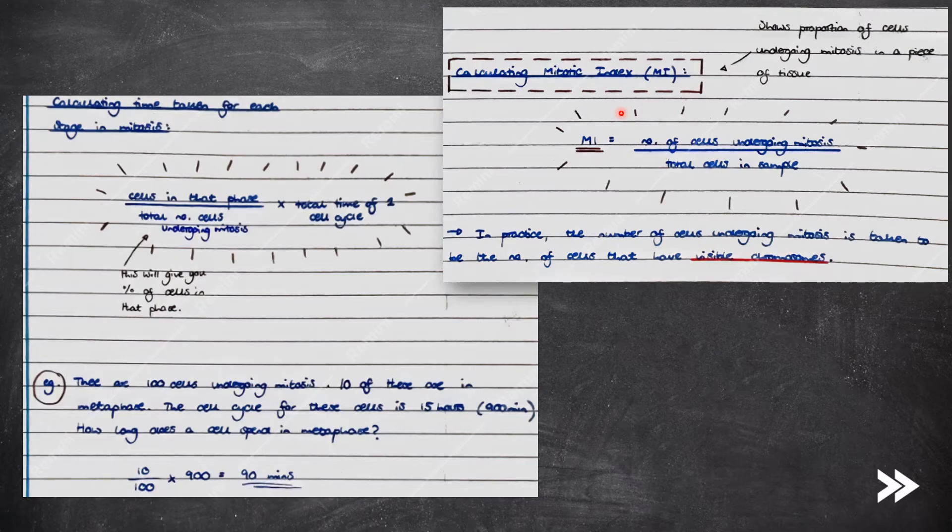In practice, the number of cells undergoing mitosis is taken to be the number of cells that have visible chromosomes. So, if you are given a microscope image of a piece of tissue, the number of cells undergoing mitosis will be the number of cells which have visible chromosomes.